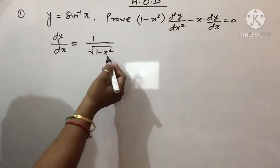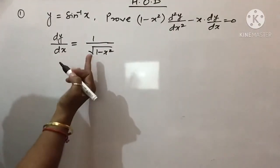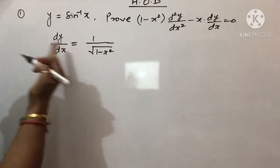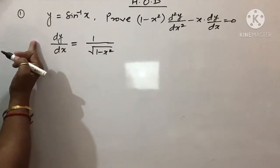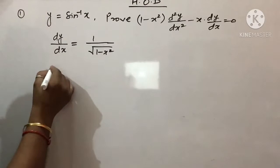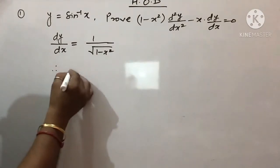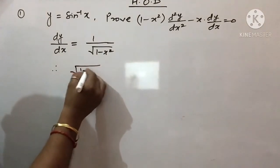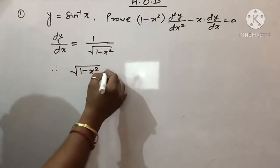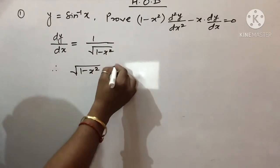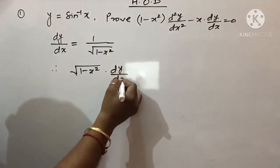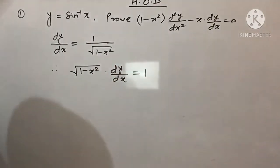Jaise ye question aapke saamne likha hua hai, toh main differentiation mein divide rule yaani quotient rule se bachne ke liye kya karunga — under root ke andar 1 - x² ko main LHS side mein shift kar lunga. So: √(1 - x²) · dy/dx = 1.